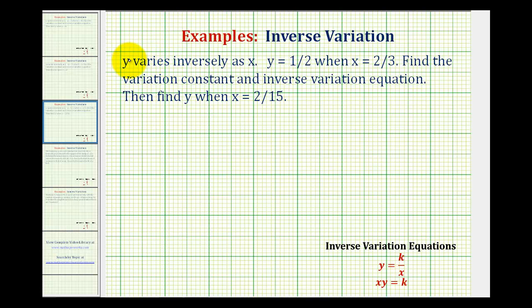We're given that y varies inversely as x. This is important because it tells us which variation equation to use. It says y varies inversely as x, so we'll be using the inverse variation equation y equals k divided by x, where k is the variation constant.